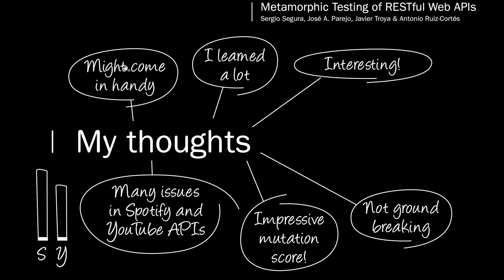The number of real issues detected is astounding considering only a small part of the APIs were tested — three out of 64 operations in the Spotify API and three out of 50 operations in the YouTube API. It is, however, hard to tell how big of an impact the proposed approach had on the result. You might have reached the same result without using the proposed patterns.